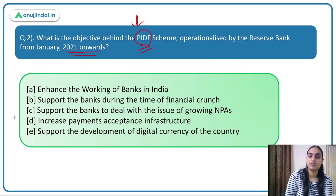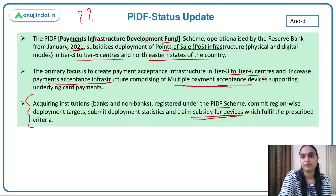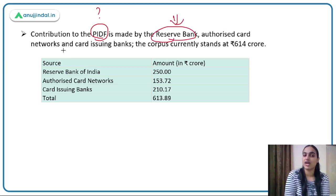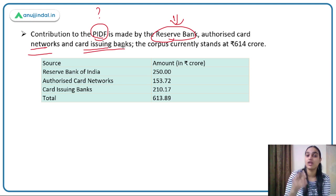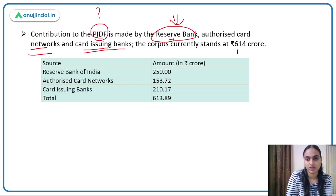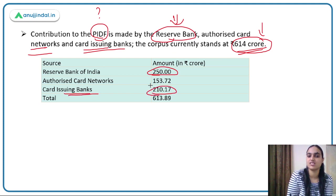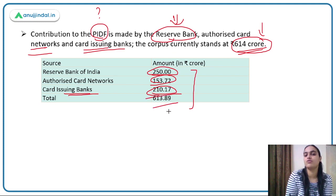The objective of this scheme is to increase the payment acceptance infrastructure in India — the answer is option D. Regarding contributions to this fund: it's not only RBI that contributes, but authorized card networks and card-issuing banks also contribute. The corpus of this fund is around 614 crores — RBI contributes around 250 crores, card-issuing banks around 210 crores, and the remaining amount comes from authorized card networks.